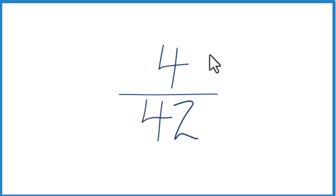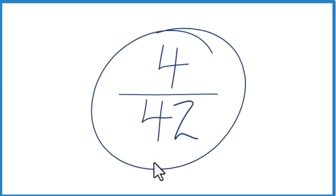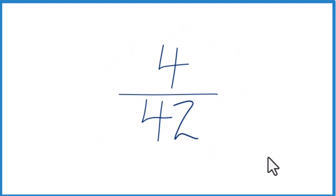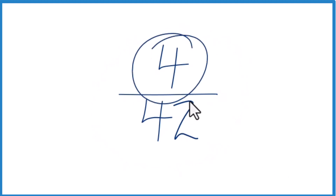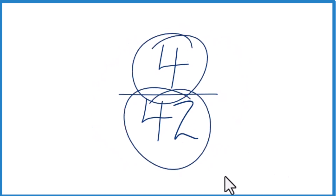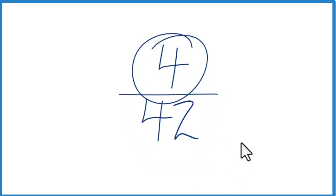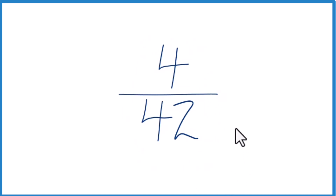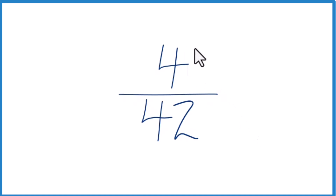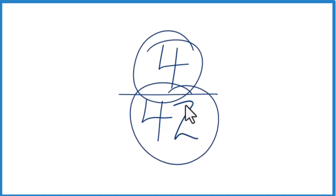Let's simplify the fraction for 40 seconds. Here's how we do it. We're looking for another fraction that's equivalent to 4 divided by 42 — one that has the same decimal value, except we have that fraction in lowest terms. To do that, we want to find the greatest common factor, which is a whole number that goes into both 4 and 42.